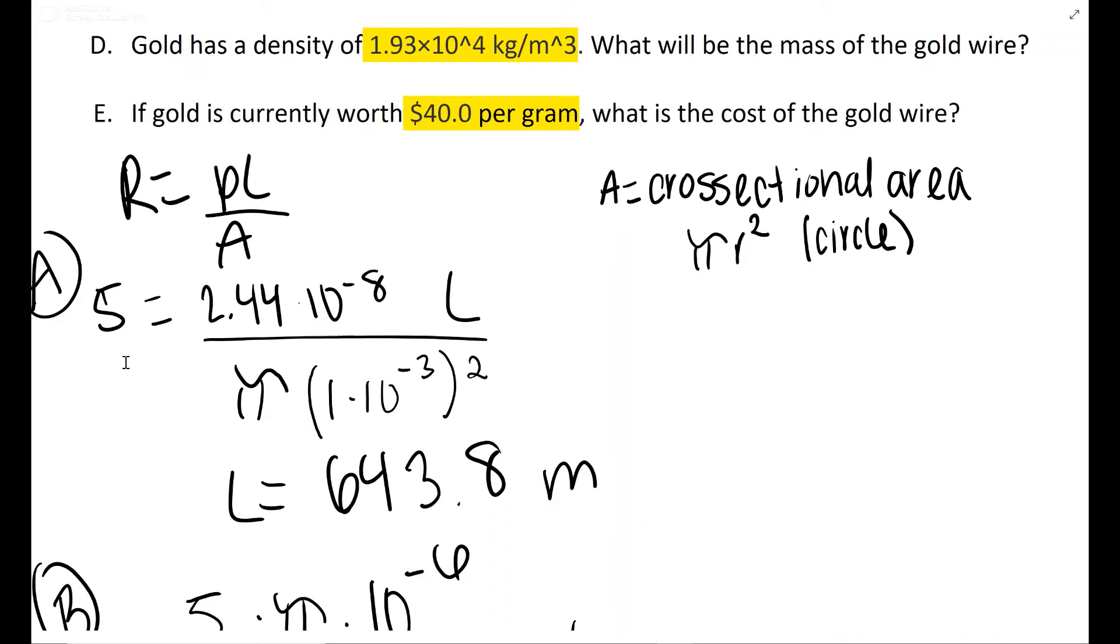So this is just this equation filled in. They give you the resistance of five ohms. They give you the resistivity per material. That's gonna be the only thing that's changing between steps A, B, and C. For gold, it's 2.44 × 10⁻⁸. Length is what you're finding, and area is this equation right here, π r². Go ahead and solve for L and that's what you get for A.